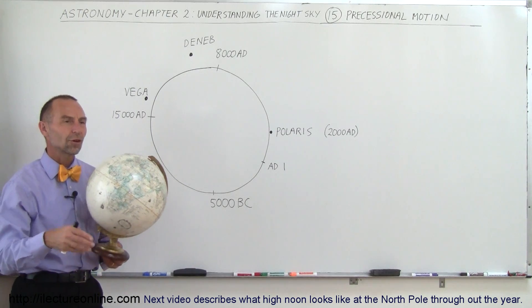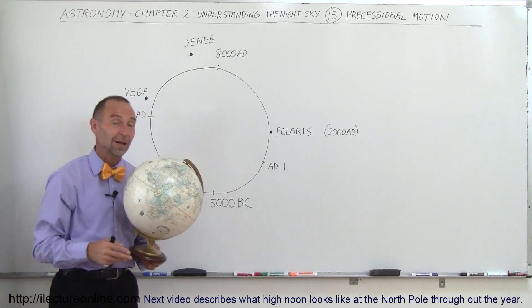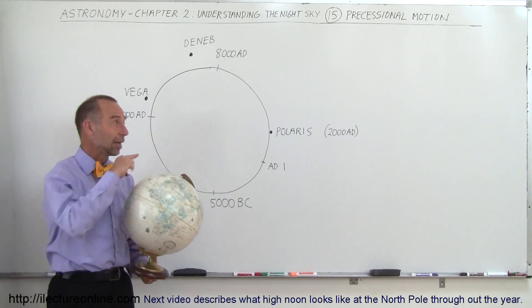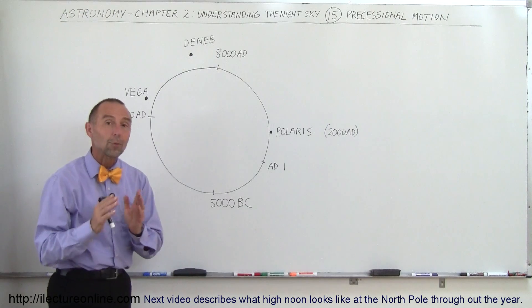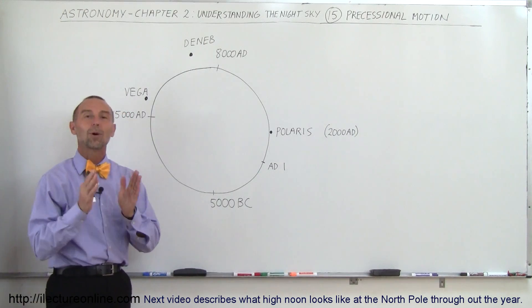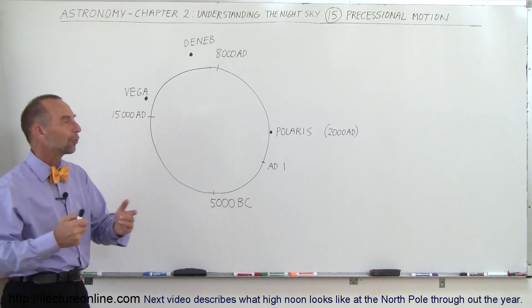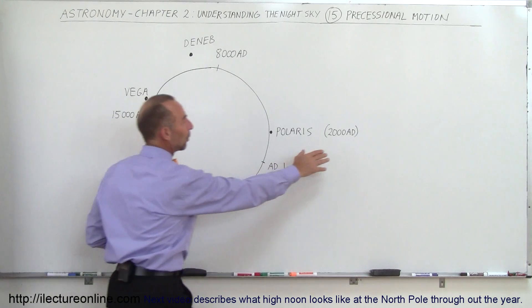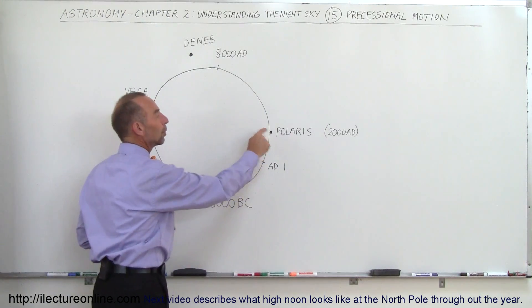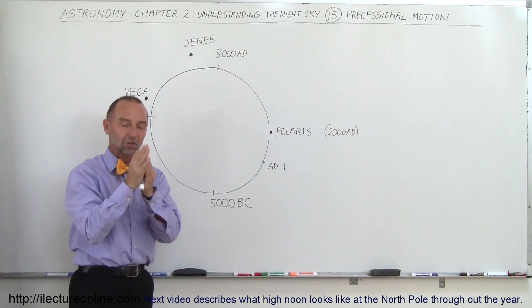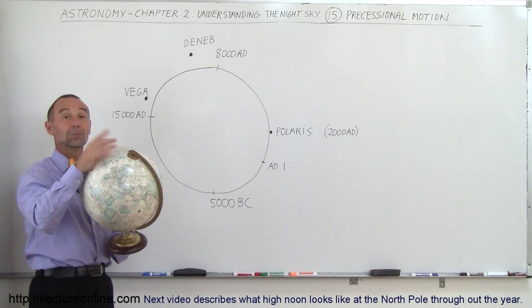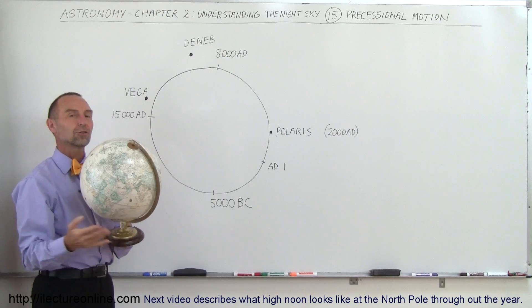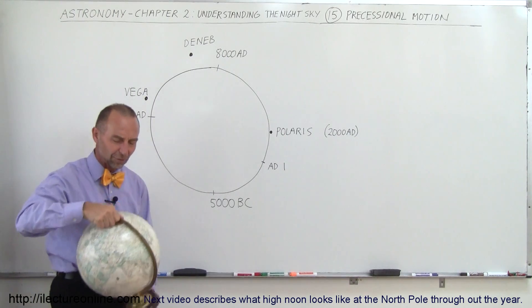But in the future, 1,000, 2,000, 3,000 years from now, that will no longer be the case. So what I've drawn up here is the result of where the North Pole of the Earth will point to over time. Currently, about 2000 AD, Polaris is right where the North Celestial Pole is for us. So that means that the North Pole right now is pointing directly towards Polaris, the North Star. Almost. It's very close.